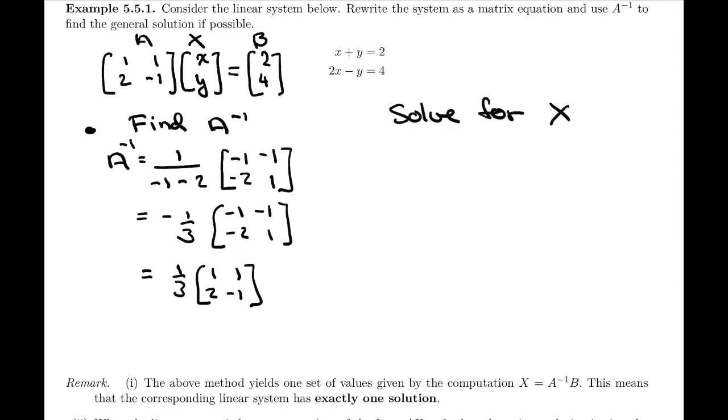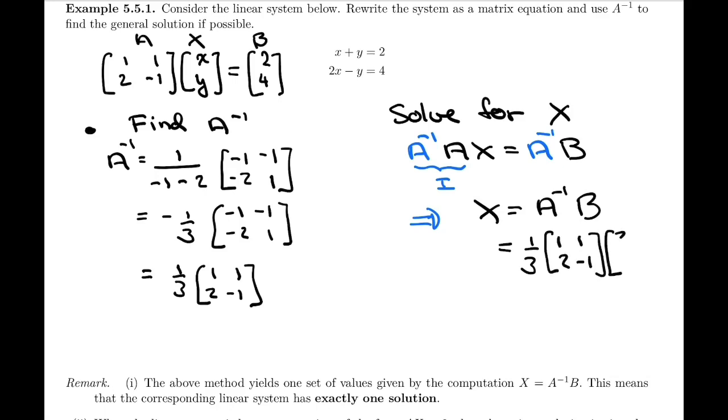Over here, I'm going to solve for x in the matrix equation. The matrix equation is Ax equals B. I'm going to leave a little room here because you can see what I'm going to do next, right? I'm going to multiply both sides by A inverse. Since A inverse times A is I, this will give me x equals A inverse times B. I'm now ready to use A inverse. That was one third times matrix [1, 1; 2, -1] times matrix B [2; 4].